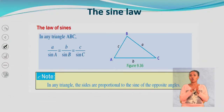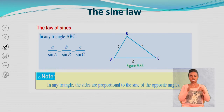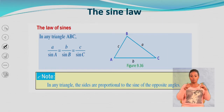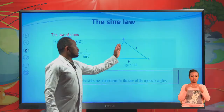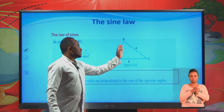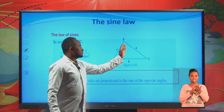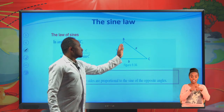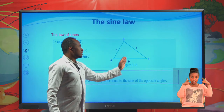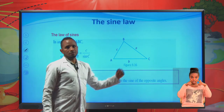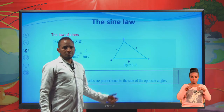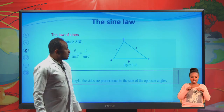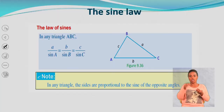In any triangle, the sides are proportional to the sines of their opposite angles. Therefore, if an angle is bigger, the side opposite to that angle will also be bigger. Now let's continue to the next part.